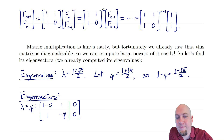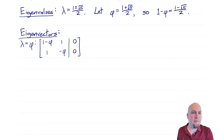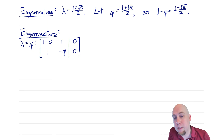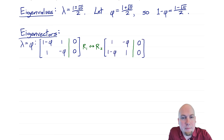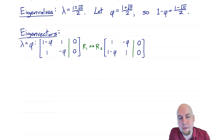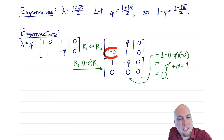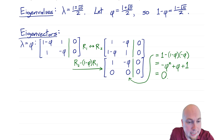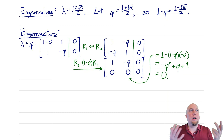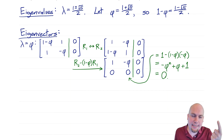Let's find the eigenvectors. For eigenvectors, you work one eigenvalue at a time. Starting with eigenvalue phi: subtract phi off the diagonal, augment with zeros, and solve that linear system. I'm going to swap these two rows so that my leading entry in the top left corner is just a 1 — it makes the arithmetic a little bit easier. Then I do row 2 minus (1 − phi) times row 1 to zero out the bottom left corner.